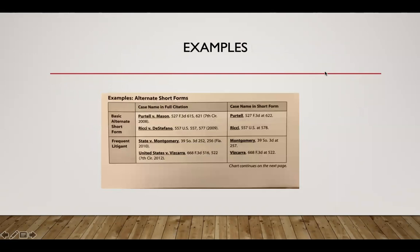Here are some examples of alternate short forms. As you can see, for the basic alternate short form with full case cites Pertel v. Mason and Risi v. DiStefano, in the shortened version you keep just Pertel and Risi, along with the volume number, reporter name, the word 'at,' and the pinpoint page number. For frequent litigants, the same applies; however, we drop the frequent litigant's name and use the other side of the 'v.' So as you can see, State and United States are dropped as they are frequent litigants.